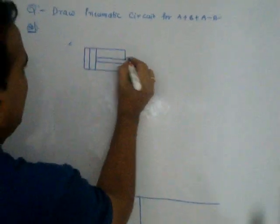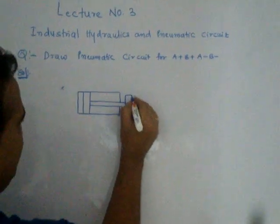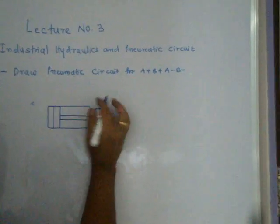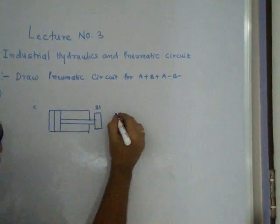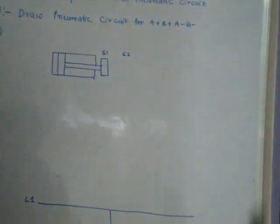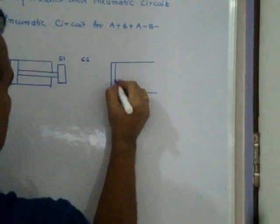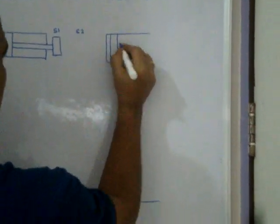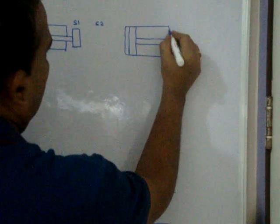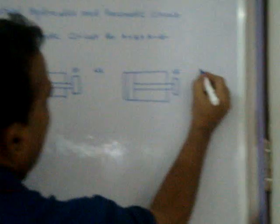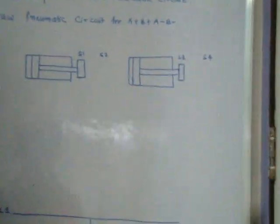A limit switch is placed here — it may be called L1 or S1. And here, S2 — a pneumatic limit switch. There is no electrical part in this problem. Everything is pure pneumatic. Here I will show S3 and S4 limit switches — pneumatic limit switches.